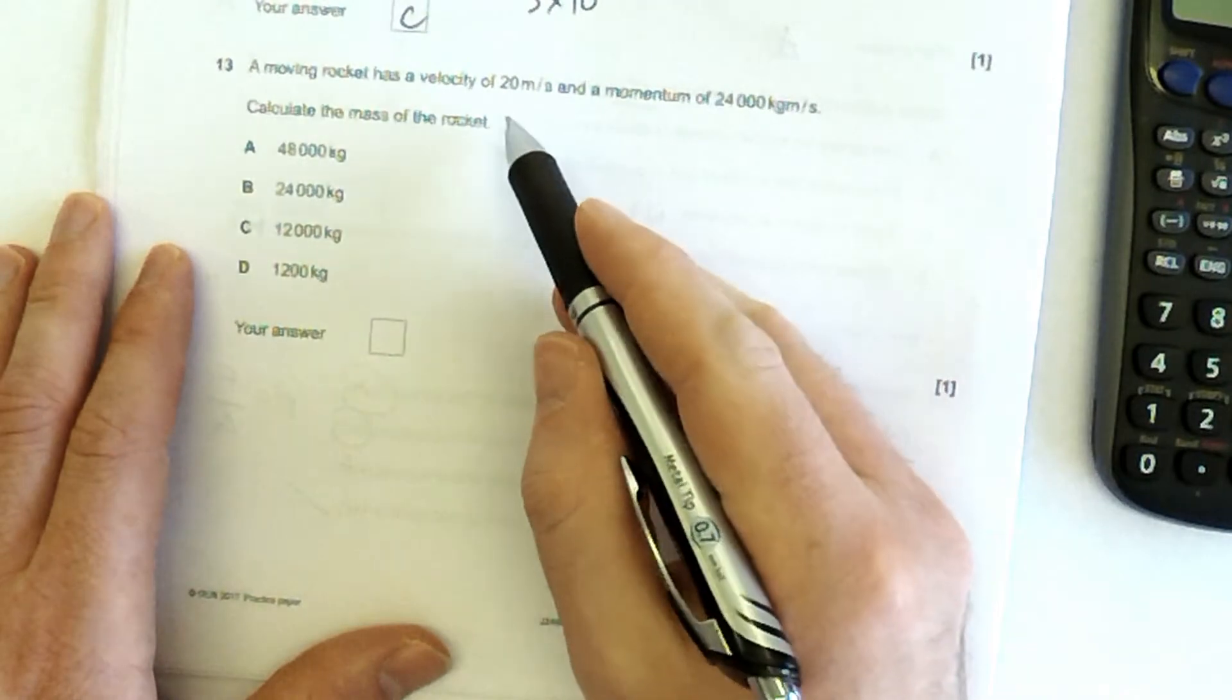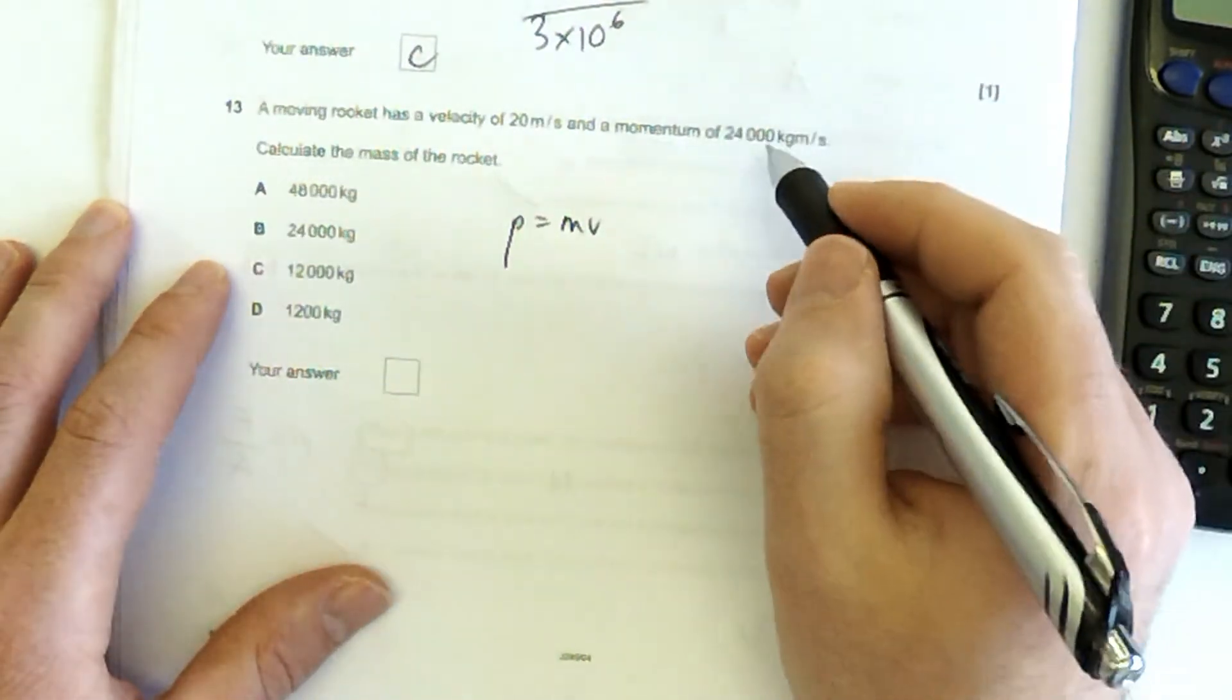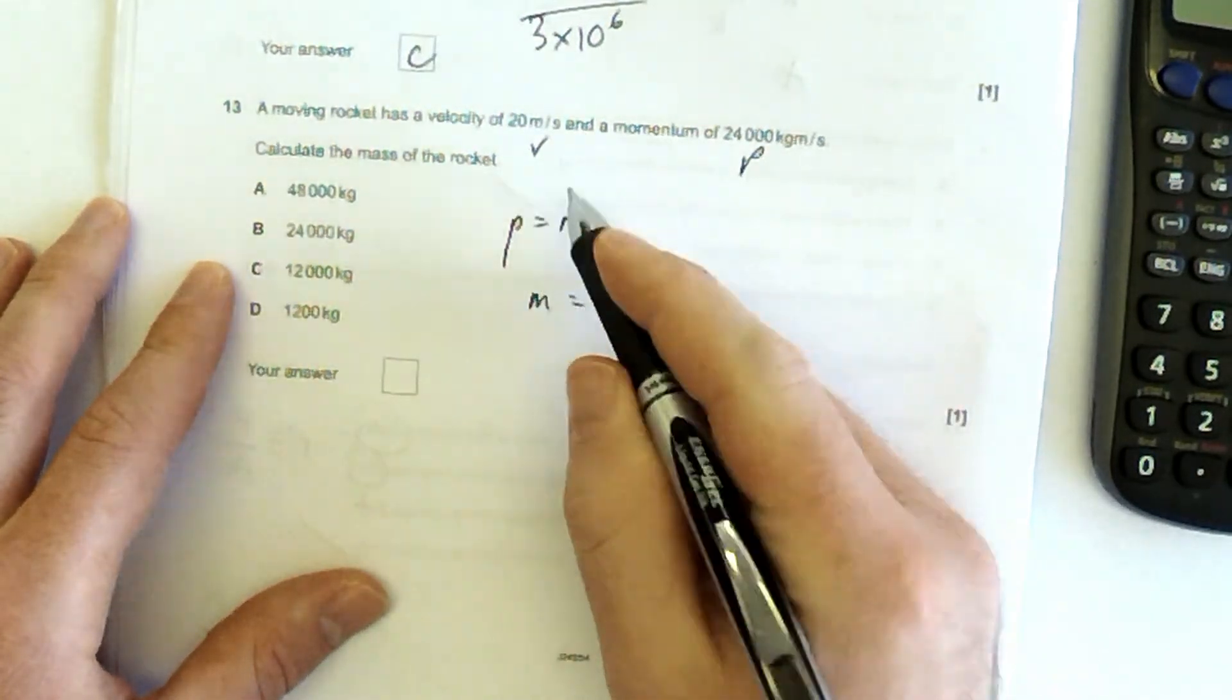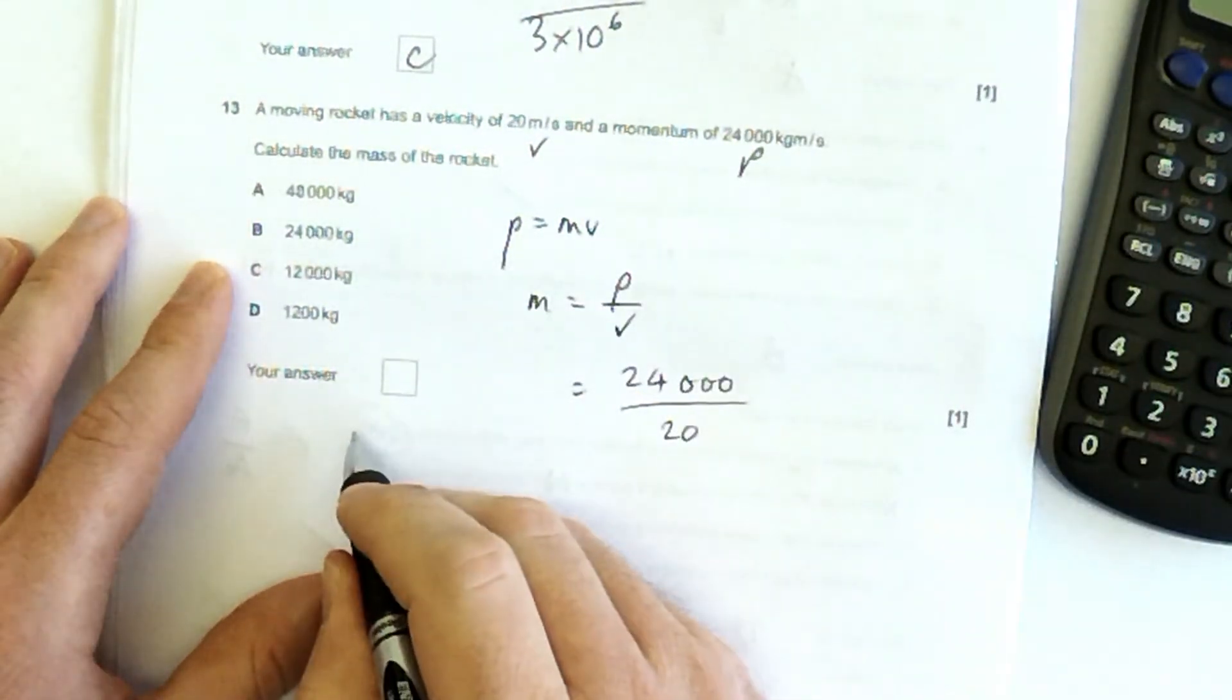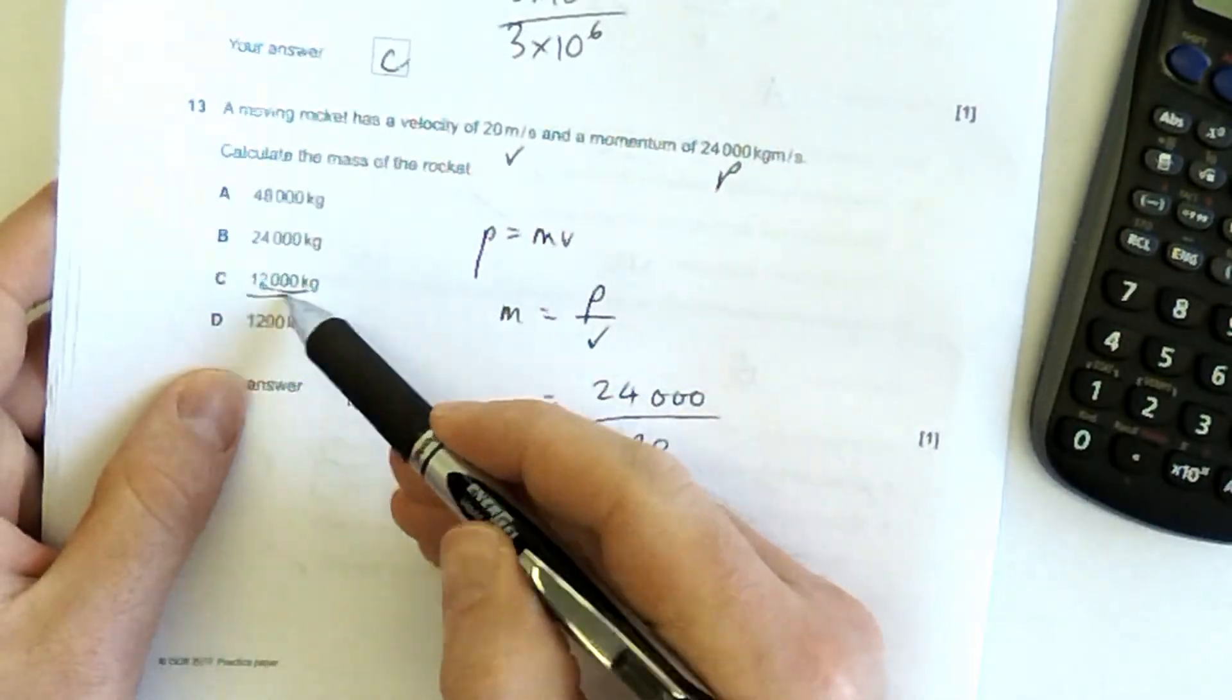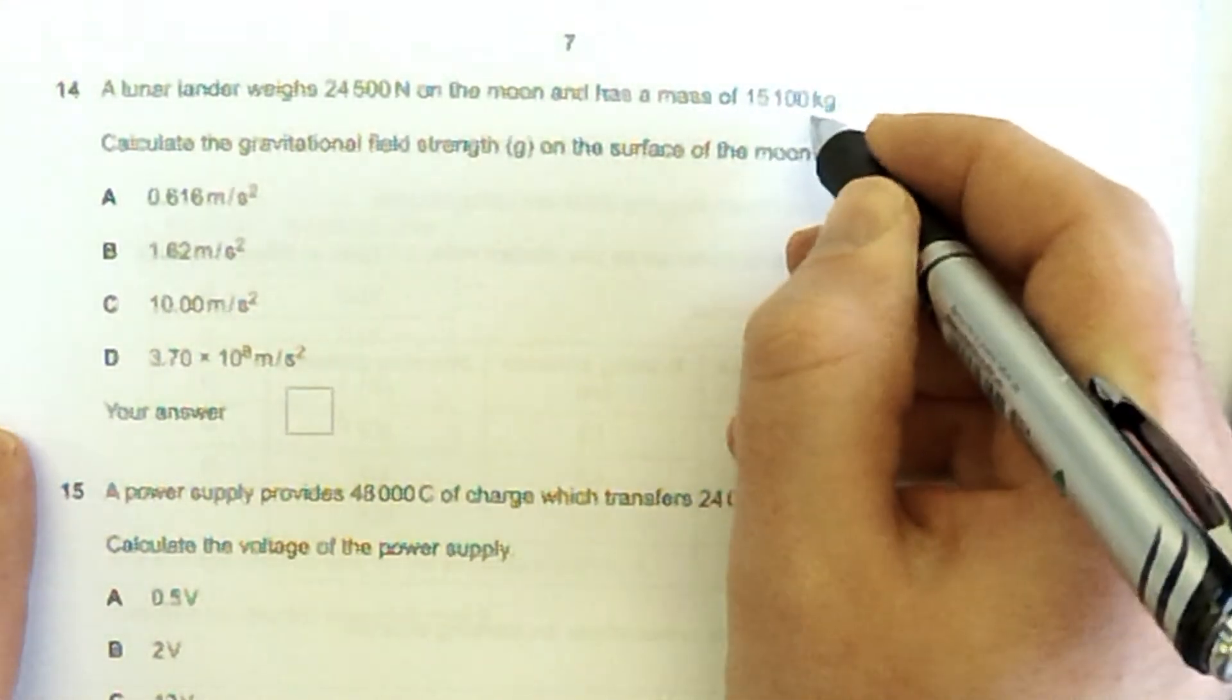Next one. A moving rocket has a velocity of 20 metres per second and a momentum of 24,000 kilograms metres per second. Calculate the mass of the rocket. So this is do you know your equations, basically. P is mv. Momentum is mass times velocity. You're told the momentum. You're told the velocity, but you want to work out the mass. So momentum over velocity gives you mass. 1,200, so D. Now, do just be careful when you're typing in the numbers of zeros when you do this type of question. You can see the distractor here is if you made an error with the number of zeros.